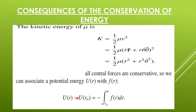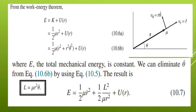The term u(r_a) we take as zero — we assume it as zero. There is no effect of adding a constant to the energy term, so we neglect it as zero. From the work-energy theorem, the total mechanical energy is the sum of kinetic energy and potential energy: E = half mu v² + u(r), which on substituting v gives E = half mu (r-dot² + r²*theta-dot²) + u(r). This equation gives the total mechanical energy, which is a constant.